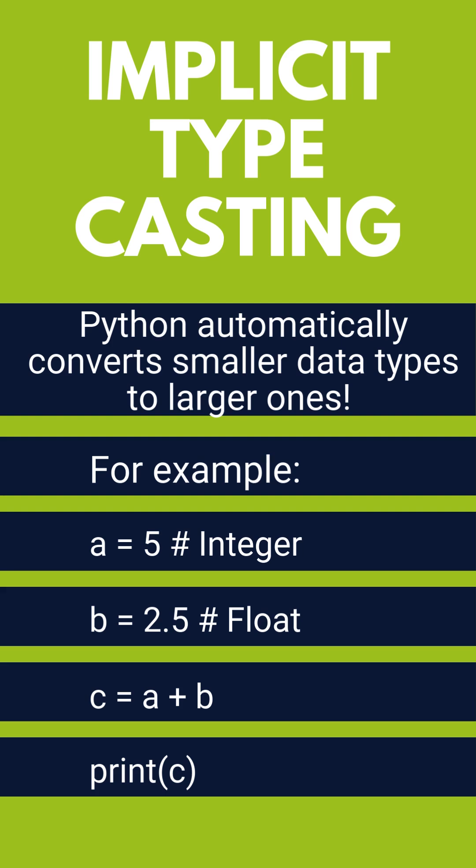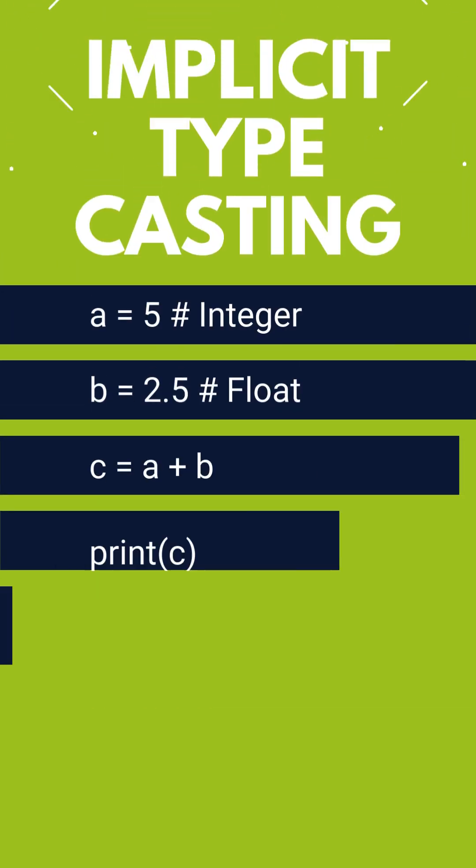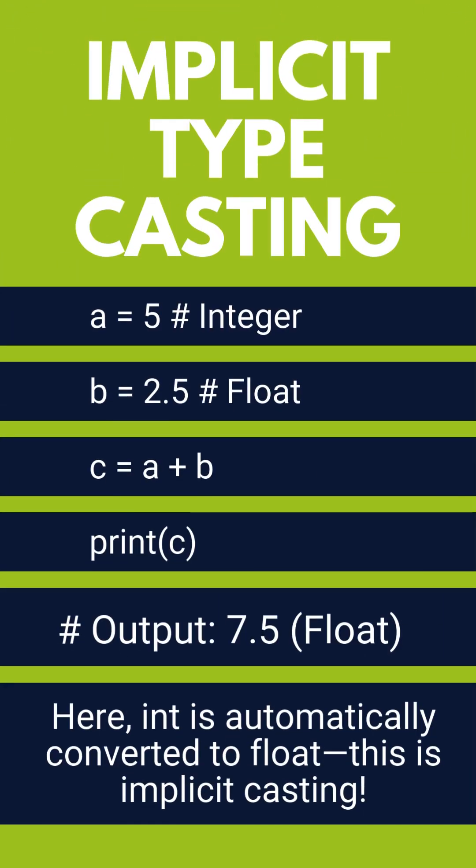a is 5 and b is 2.5. Both are different data types. Now in the third step, we are performing the addition of a plus b. So now what will happen? Interpreter will automatically convert the integer data type into the float data type. And as a result, the output is 7.5. This is known as implicit casting.